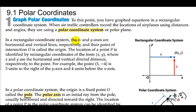In a rectangular coordinate system, the x and y axes are horizontal and vertical lines, respectively, and their point of intersection, O, is called the origin. The location of a point P is identified by rectangular coordinates of the form (x, y), where x and y are the horizontal and vertical directed distances, respectively, to the point. For example, the point (3, -4) is 3 units to the right of the y-axis and 4 units below the x-axis.